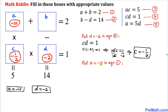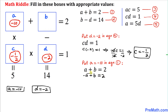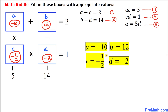For the final step, we substitute A equals negative 10 into Equation 1: negative 10 plus B equals 2. Moving negative 10 to the other side, B equals 2 plus 10, so B equals positive 12. Here are our final values: A equals negative 10, B equals 12, C equals negative 1/2, and D equals negative 2. Thanks for watching — please subscribe for more exciting videos!